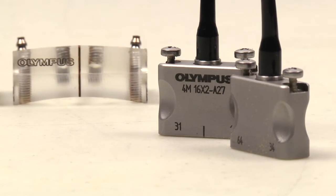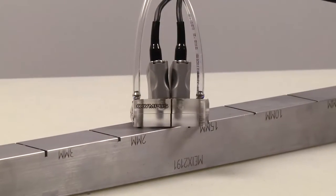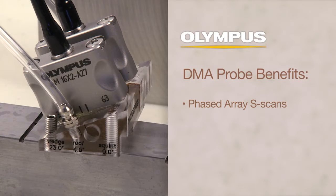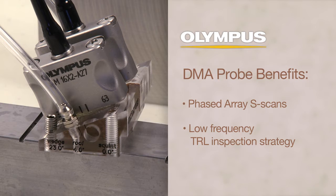The Dual Matrix Array or DMA probes improve flaw detection and sizing of difficult to penetrate materials by combining the benefits of phased array S-scans and low-frequency transmit-receive or TRL inspection strategy.